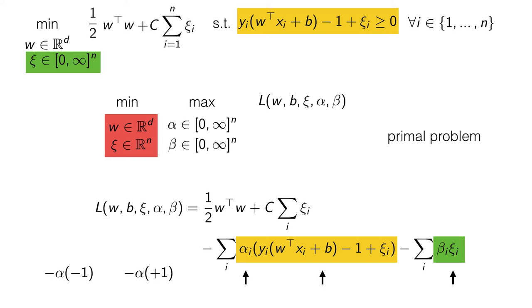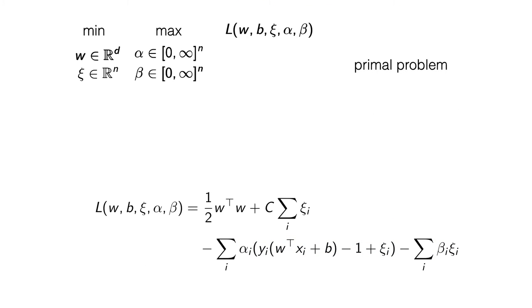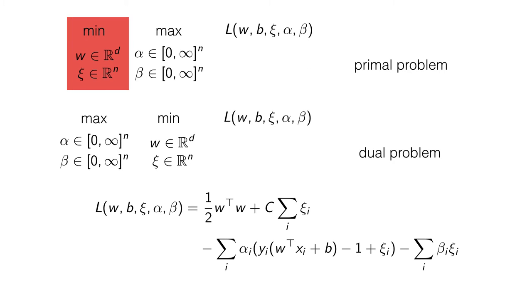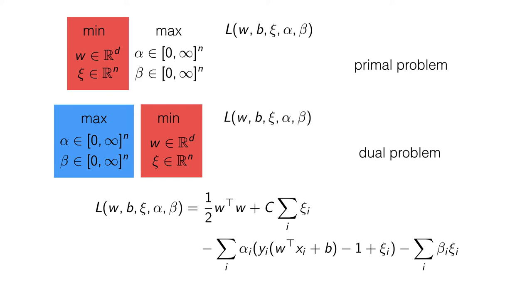To recap: all we've done is reformulate the constraints as a min-max problem, where an adversary penalizes us arbitrarily badly if we violate constraints. This is still the primal problem. To get from the primal to the dual, we do something simple — we look at this min-max problem and flip it into a max-min problem. Now the minimization is on the inside and the maximization is on the outside. The reason this is valid — that we haven't changed the solution — is because we have strong duality in this particular case. Now we'll look at this dual problem and try to simplify it, using the KKT conditions.